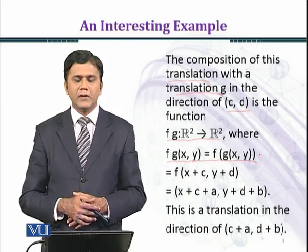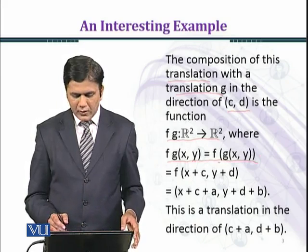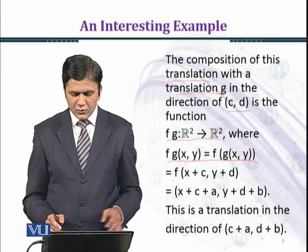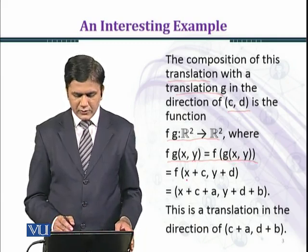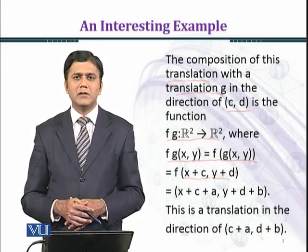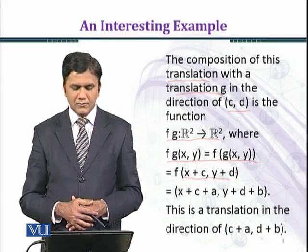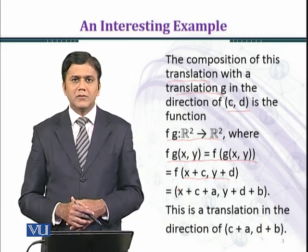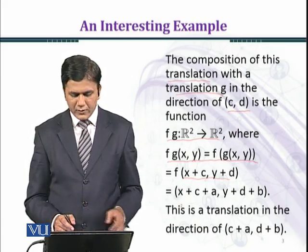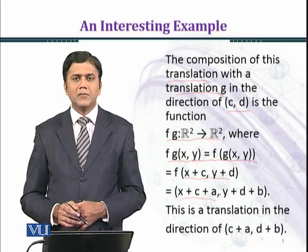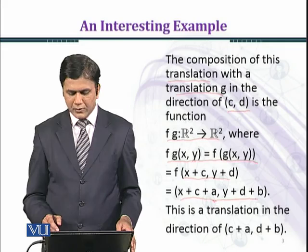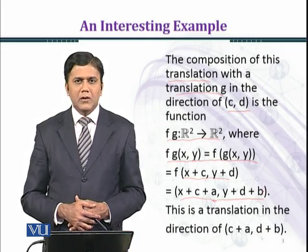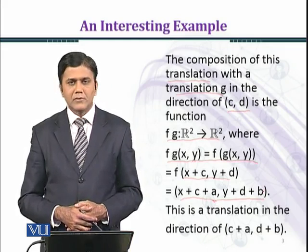The image of (x, y) under g is given by (x + c, y + d), and the image of (x + c, y + d) under f is (x + c + a, y + d + b). Here you can see c + a is a real number, and d + b is a real number.